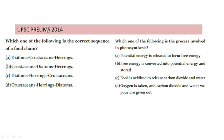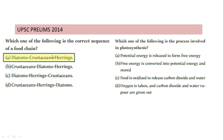The UPSC 2014 question asks: which one of the following is the correct sequence of an aquatic food chain? The options involve diatoms — algae that are producers and the first level. Diatoms are consumed by crustaceans, which are the insects, and then herring as the carnivore. Option C also looks correct but is not, because diatoms are not directly consumed by carnivorous herrings — crustaceans must be in the middle. The correct option is A: diatoms as producer, crustaceans as herbivore, and herrings as carnivore.